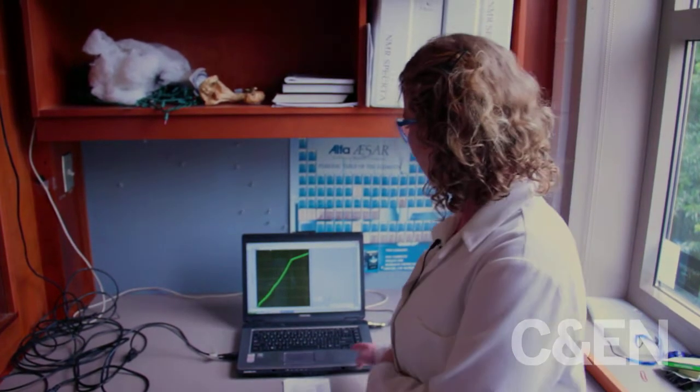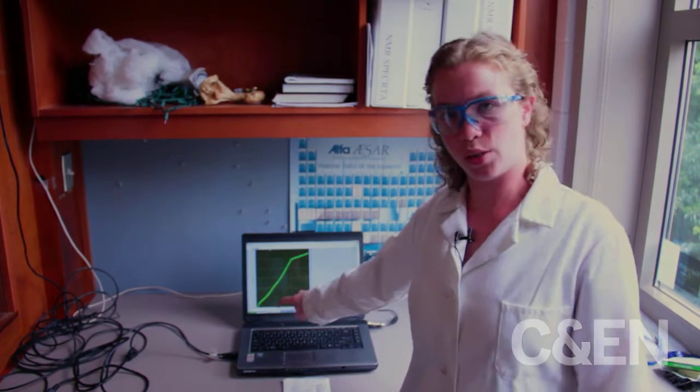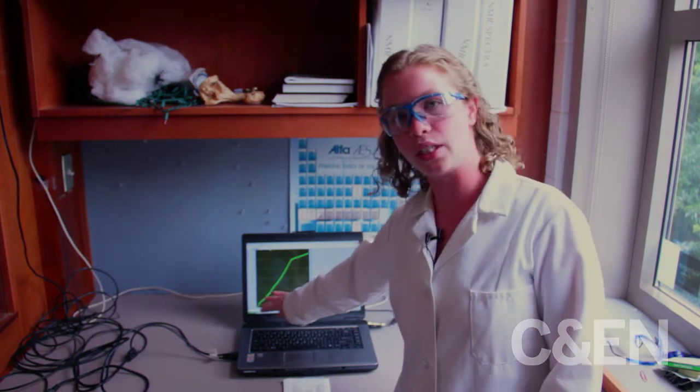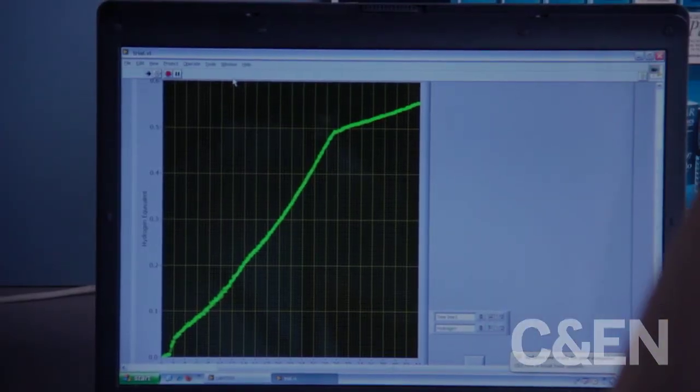The burette system is hooked up to a computer here, and we have a program that allows us to measure the equivalent amounts of hydrogen coming off. This green line represents the hydrogen being produced.